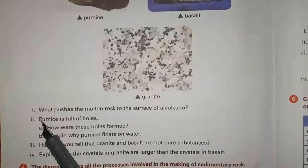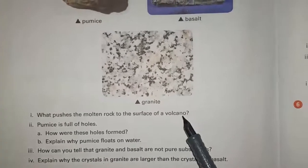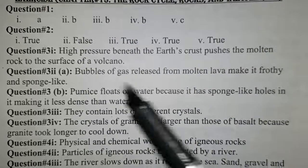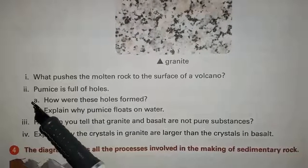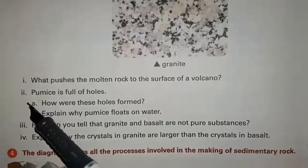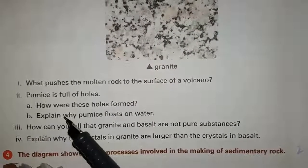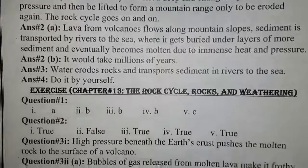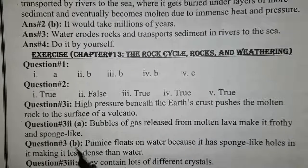Question number 1: what pushes the molten rock to the surface of a volcano? Answer: high pressure beneath the earth's crust pushes the molten rock to the surface of a volcano. Question number 3, part 2: pumice is full of holes. Part A: how were these holes formed? Answer: bubbles of gas released from molten lava make it frothy and sponge-like.